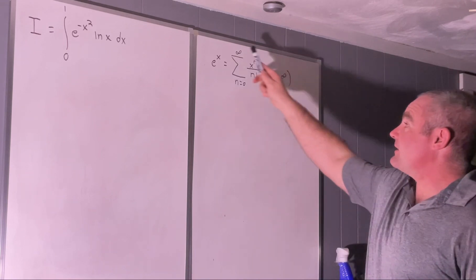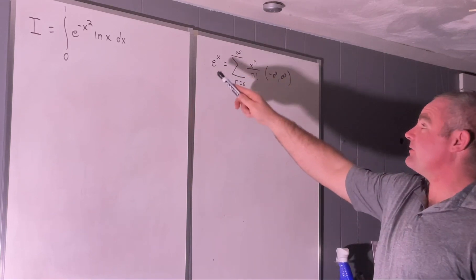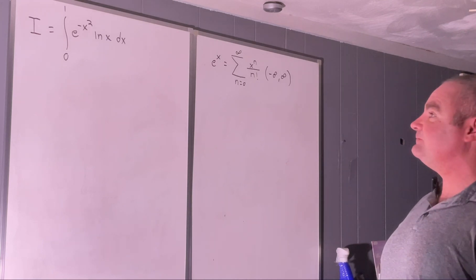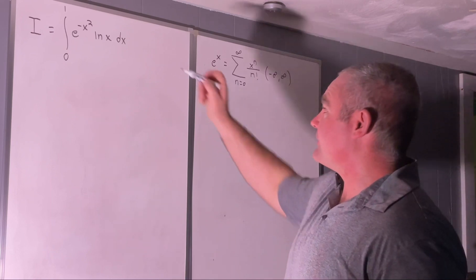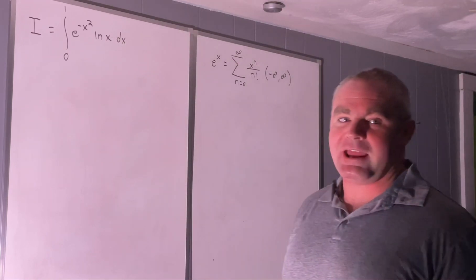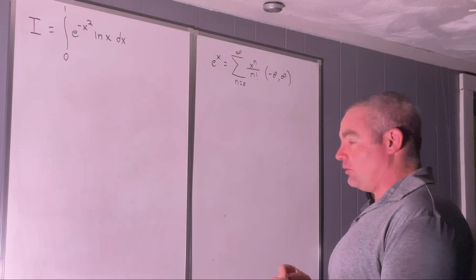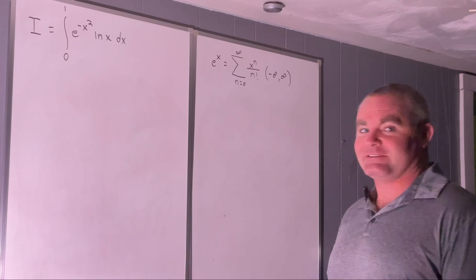And we'll be using the McLaurin series representation for the exponential function. Okay, so our first step, by the way, there's a big clue in that natural log x right there, that we're going to be replacing that with an x to the t.